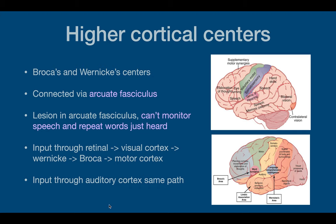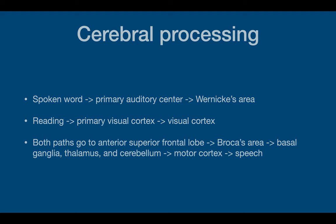Input through the auditory cortex — when you're hearing people speak — goes through the same path, besides the visual cortex. In the spoken word, it goes to the primary auditory center and then to Wernicke's area. If you read, it goes to the primary visual center and then to the visual cortex. Both paths go through the anterior superior frontal lobe into Broca's area, then the basal ganglia, thalamus, and cerebellum — all involved in coordination — and finally to the motor cortex to produce speech.